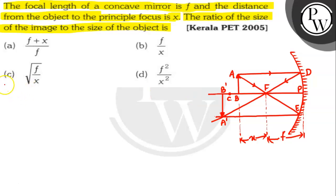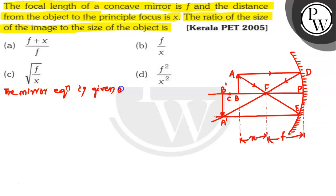So this is the diagram according to the question. The mirror equation is given as: 1/f = 1/v + 1/u. This is equation 1.